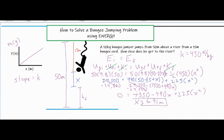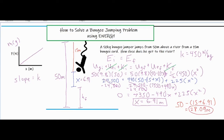Remember, x = 6.91 meters is the stretch of the cord, not the final answer. The question asks how close the jumper gets to the river. Plugging x back in: hf = 50 − (15 + 6.91) = 50 − 21.91 = 28.09 meters. The jumper gets as close as 28.09 meters to the river.